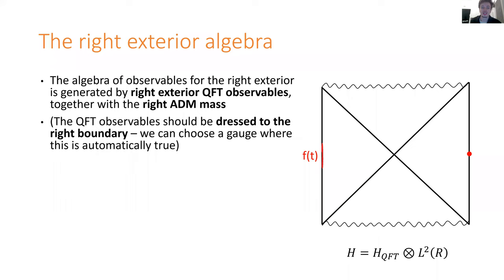Now we have a Hilbert space, we can describe an algebra acting on it generated essentially by two things. The first is just QFT observables in the right exterior. By the timelike tube theorem, it's enough to consider QFT observables at infinity. The second thing is the right ADM mass. There's a subtlety: in quantum gravity, local bulk observables need to be dressed to be diffeomorphism invariant. Because we're working in a fixed background, the dressing is pretty trivial — we describe observables as acting at a certain right boundary time. We already chose a gauge where the right boundary time is equal to the bulk time, so ordinary QFT observables acting on H_QFT are already naturally dressed to the right boundary.